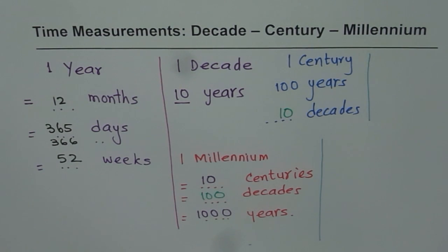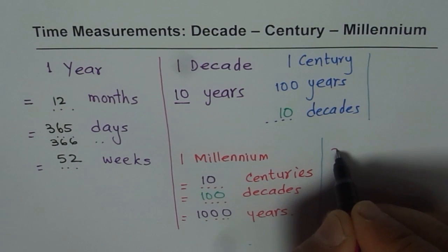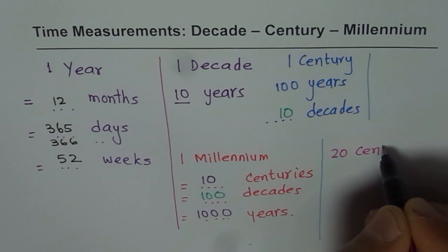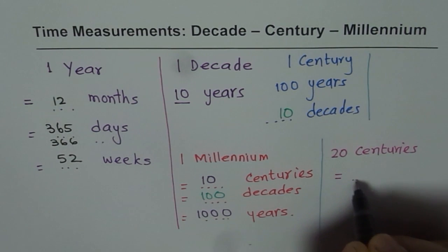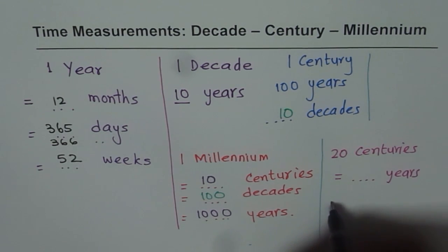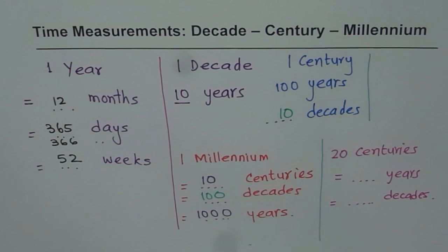So what I will do this time is, I will write down, let us say if we have 20 centuries. Then that is equal to how many years and how many decades? Think about it and write down your answer. Thank you and all the best.